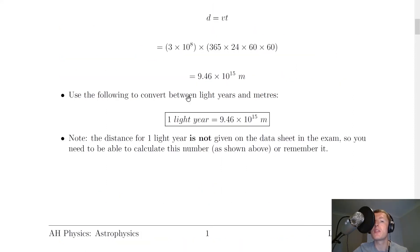We can therefore use the following to convert between light years and meters if a question presents distances in light years and we want meters to do calculations. One light year equals 9.46 times 10 to the 15 meters. Note that the distance for one light year is not given on the data sheet in the exam, so you do need to be able to calculate this number as shown above or remember it.